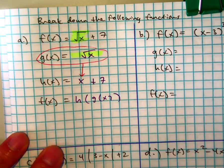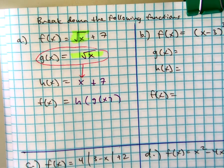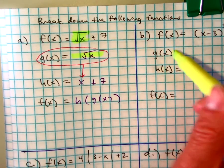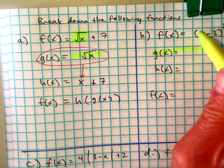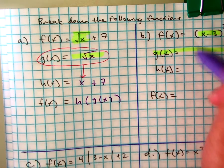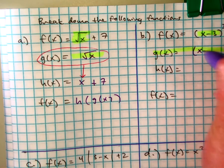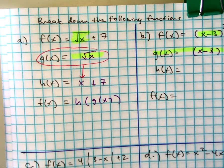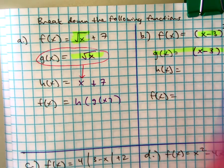Put your finger on what you think I'm going to make g of x. I highlighted x minus 3.